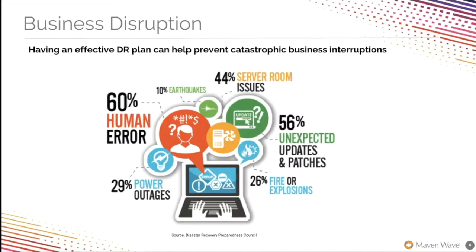Service interruption events can happen anytime. They affect your customers and internal staff, and in turn impact your financials. More importantly, they impact customer confidence, and in some cases like fintech and healthcare, you will run into risk of compliance. Typical examples include a network outage, a critical bug introduced by your latest application rollout, a ransomware attack, or a natural disaster. When things go wrong, it is important to have a robust, targeted, and well-tested DR plan.